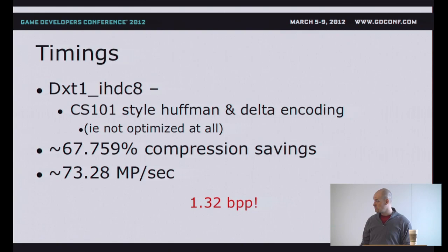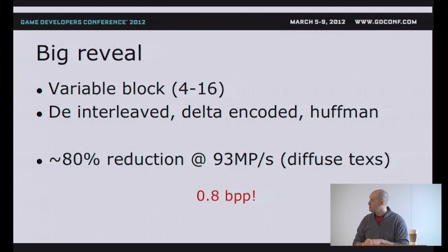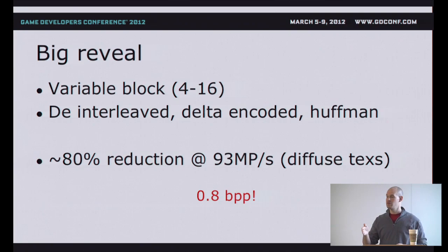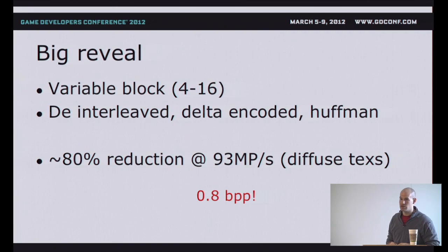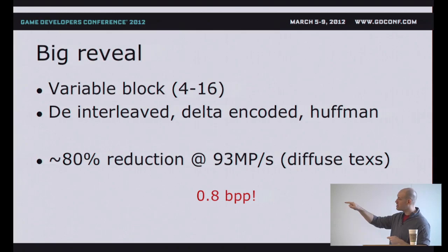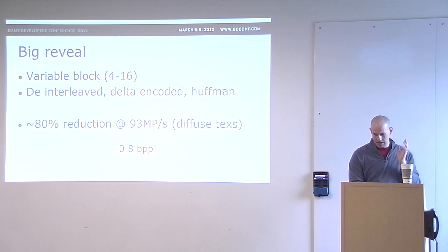The big reveal: why stop at 8x8 blocks? If we modify our image heuristics to scan based upon the frequency of the image and use variable block sizes between 4x4 and 16x16, applying the same deinterleave, delta encode, and Huffman encode pipeline, we get about 80% reduction at 93 megapixels per second for diffuse textures only. That gets us down to 0.8 bits per pixel on a single core — with offline compression doing all the heavy lifting.